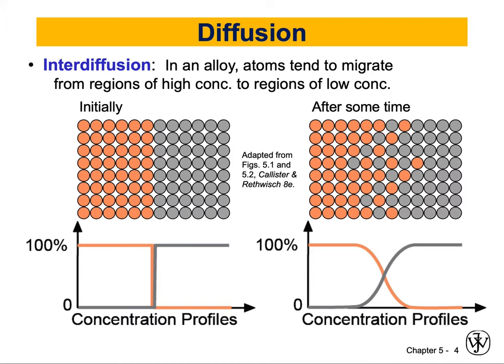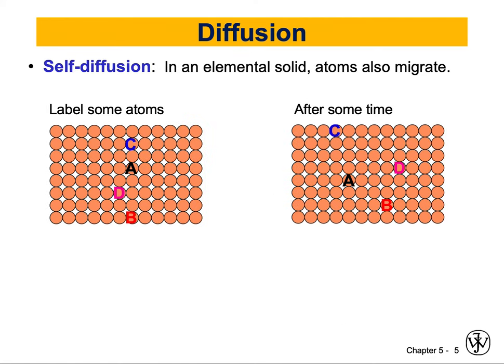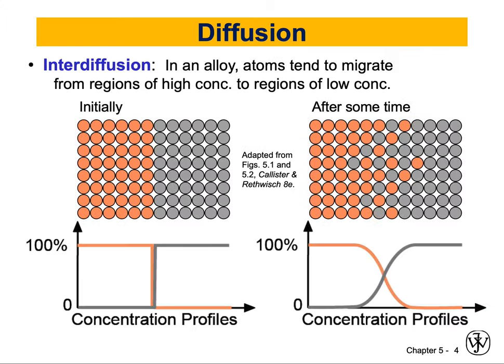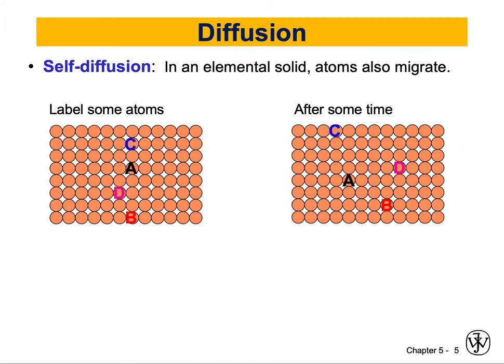The second term is something called self-diffusion. In elemental solids — please remember that in the previous example we had two elements making up our material — now if the material is made of only one element, so all of it is, say, zinc or cobalt, it's not an alloy. It's a material made of one element alone. That's what we call elemental solids.